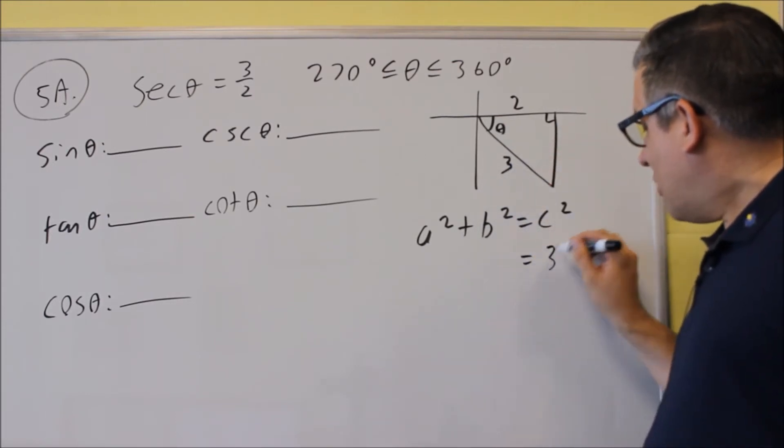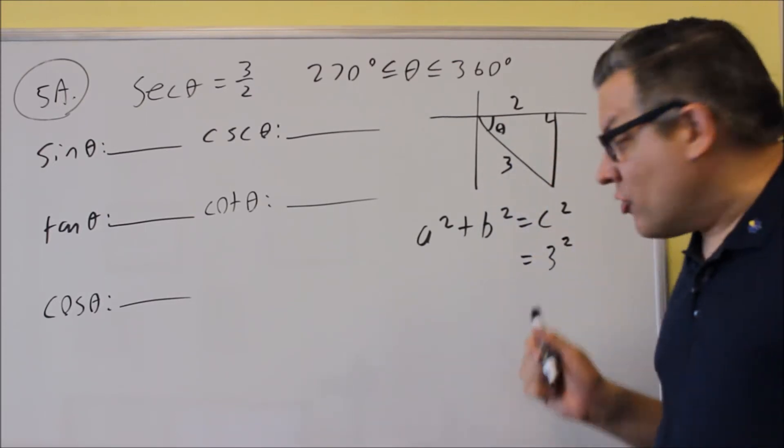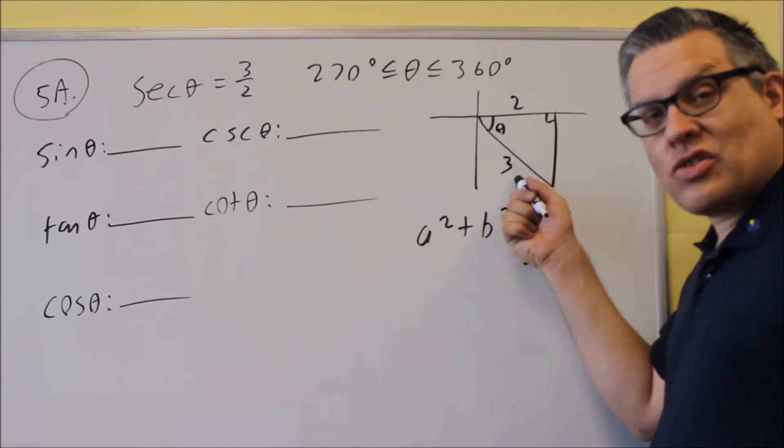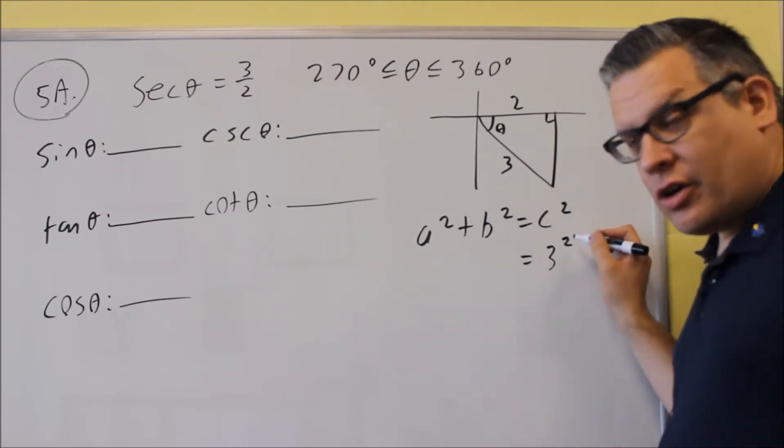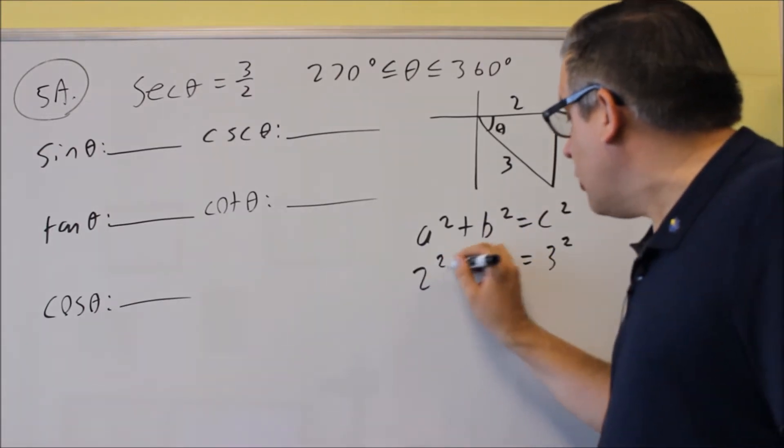This right here, the three, that's the one that goes in for c. So this side is opposite the right angle. That's always your c. That's your hypotenuse. That goes in here. a and b doesn't matter what you want to use.